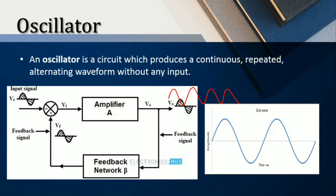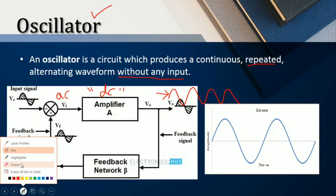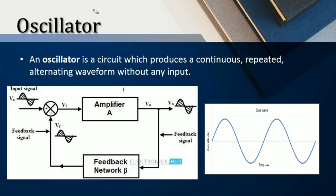These oscillations are repeated — the same oscillations, the same sinusoidal waveforms, you will be getting at the output node. Here we also specify 'without any input,' meaning we do not give any AC input. We get AC output at the output. The only thing we give is a DC supply to bias the circuit. In this block diagram we can see the important components of an oscillator.